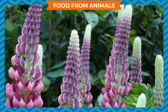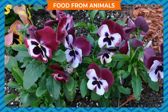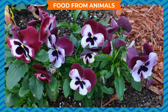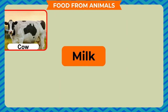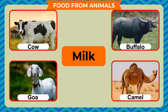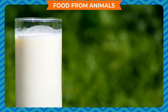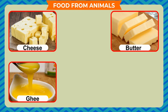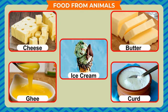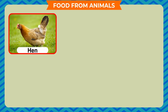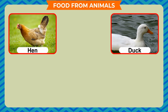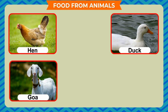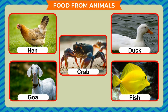Food from animals: Plants are considered the main source of food, but animals are also one of the important sources of food. The food we get from animals includes: milk from cow, buffalo, goat, and camel. Milk is used to prepare several products such as cheese, butter, ghee, curd, and ice cream.